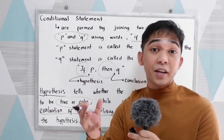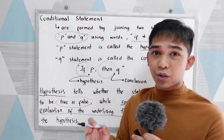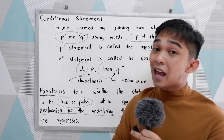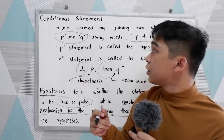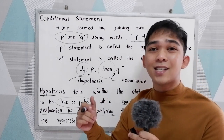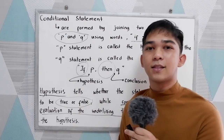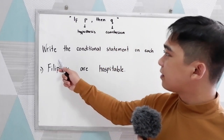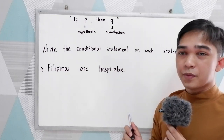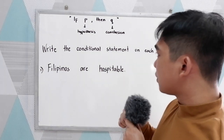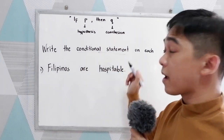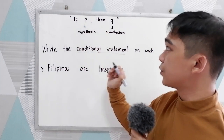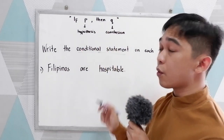In this lesson, it is very important that you first determine what is your hypothesis and your conclusion. Let's have a series of examples to further understand conditional statements. Our direction is to write the conditional statement for each given statement in if-then form, following 'if P then Q,' where P is the hypothesis and Q is the conclusion.